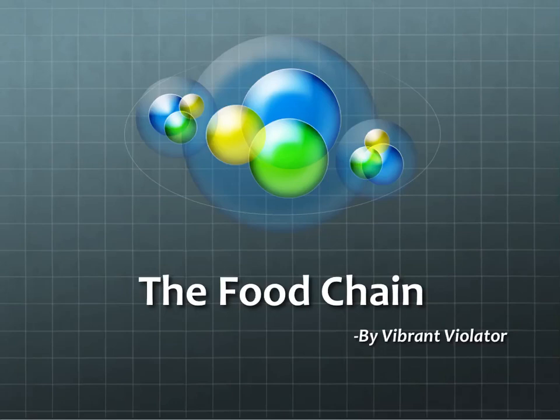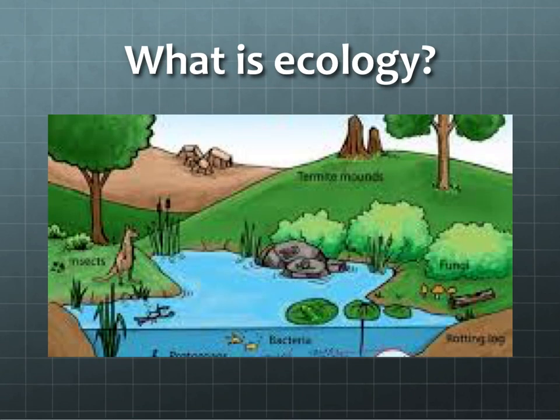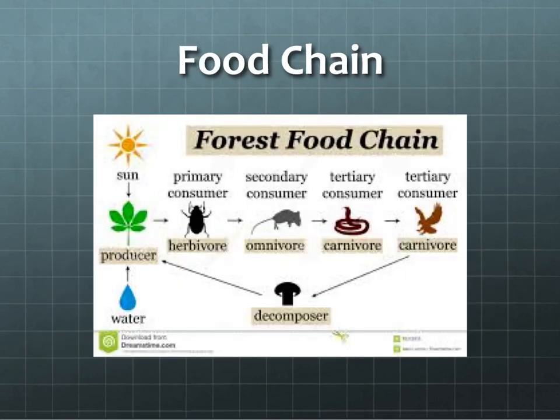Hello everybody, we are here for another video and an interesting one too. Before we dive right in, let's recall some basics. We know that biology is the study of living organisms. Ecology is the relation between living things, mainly dependence — it is a branch of biology. Today we will rouse your interest by discussing the food chain.